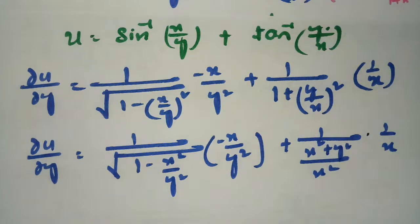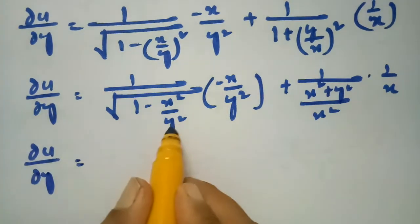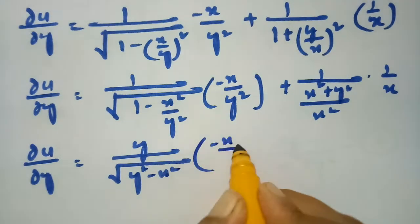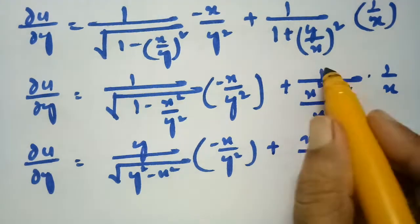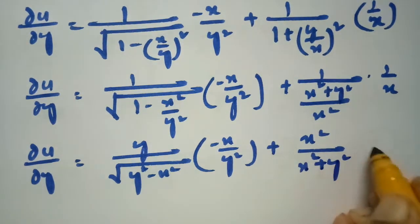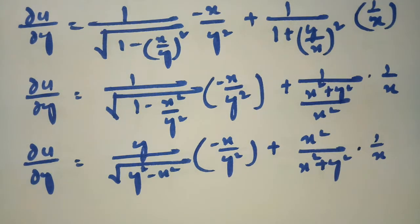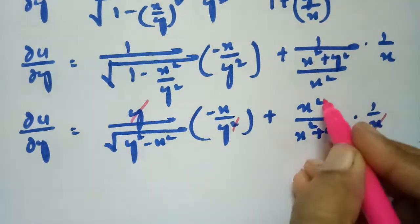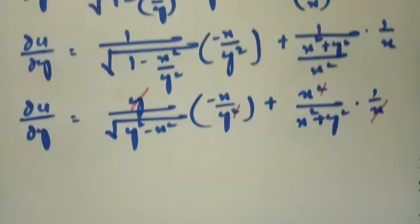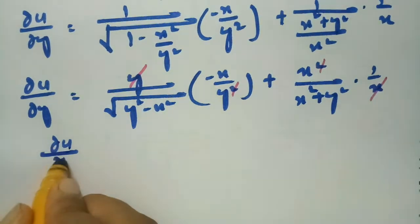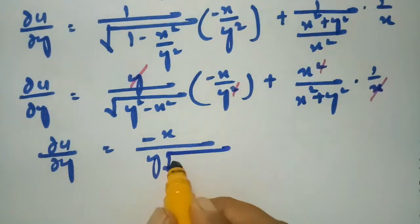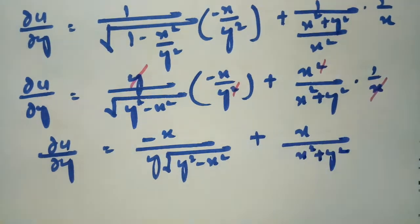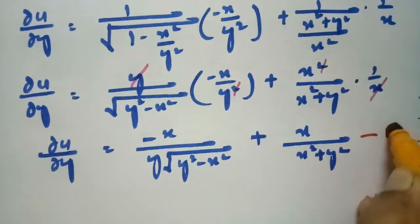Simplifying ∂u/∂y: sending y to the numerator gives root over y square minus x square times minus x by y square, and sending x square to the numerator gives x square plus y square times 1 by x. After cancelling, ∂u/∂y equals minus x by y times root over y square minus x square plus x by x square plus y square. This is equation B.